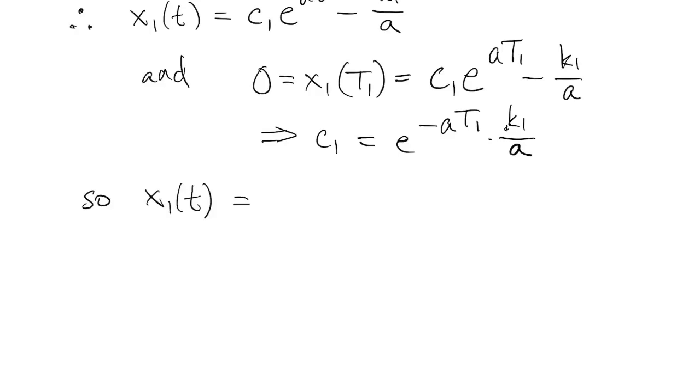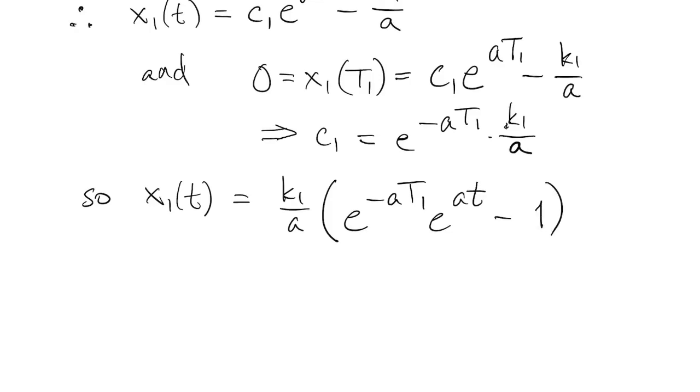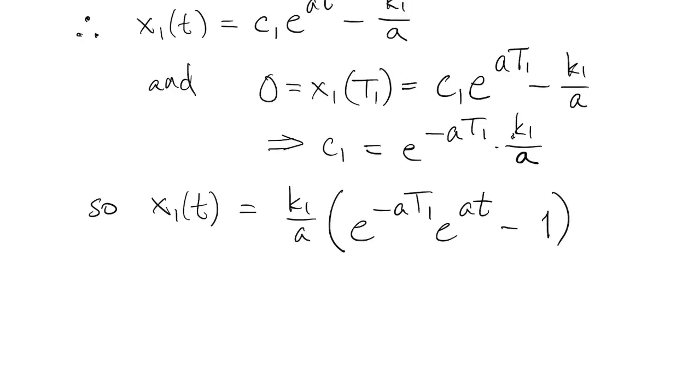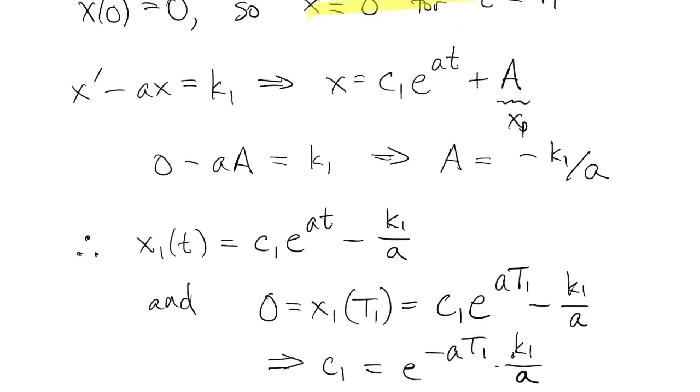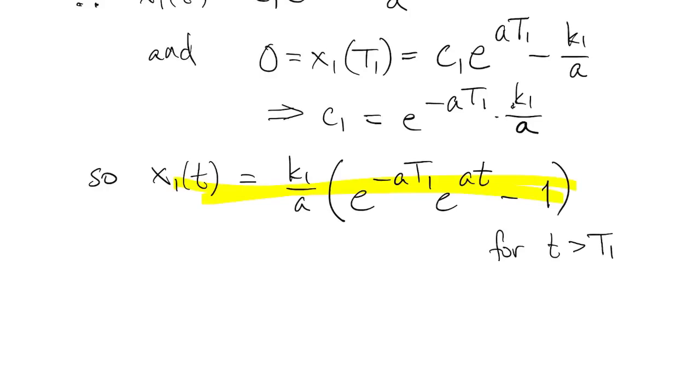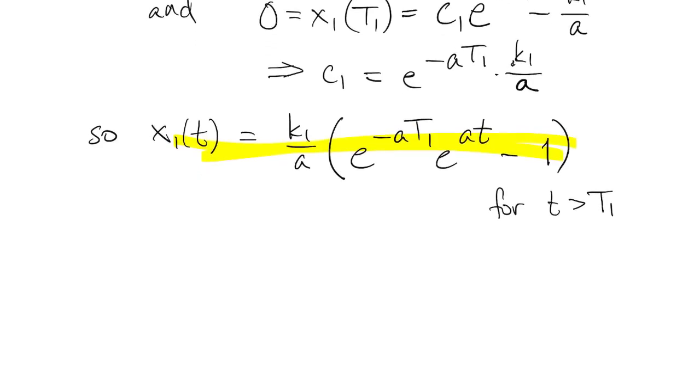So now we know this x1. It's 0 before t1, and it's equal to this after t1. So when we put that together, the initial part of 0 and then this, we can write the whole thing in one shot by using a step function again. So we just multiply by a switch turning on at time t1.